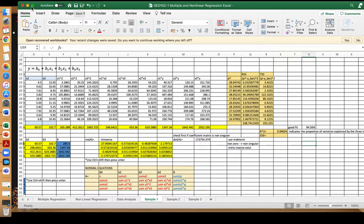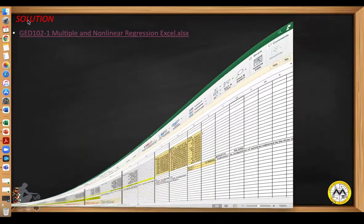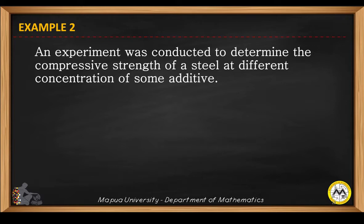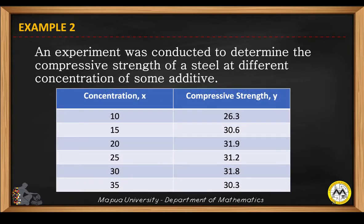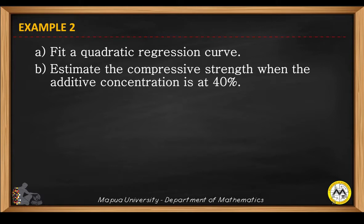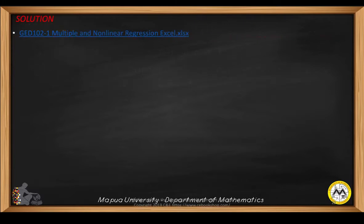Now we proceed to the next example. An experiment was conducted to determine the compressive strength of a steel at different concentrations of some additive. You are given the first column as concentration and the second column as the dependent variable y, the compressive strength. The task is to fit a quadratic regression curve and estimate the compressive strength when the additive concentration is at 40 percent. The solution is very similar to multiple regression.